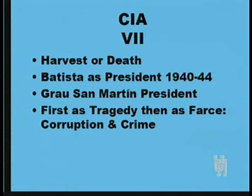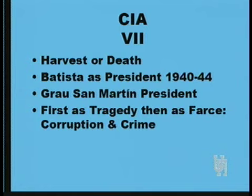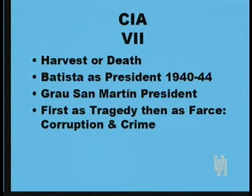After Batista left office in 1944, his former nemesis Grau San Martín was elected president. As Karl Marx said, history repeats itself — first as tragedy, then as farce. The well-intentioned reformist of 1933 returned as one of the most corrupt leaders in Cuban history. His mistress and sister-in-law had an office next to his in the presidential palace where she collected bribes. When you wanted to do business in Cuba, you negotiated with her and paid for whatever concession or grant you wanted from the government.